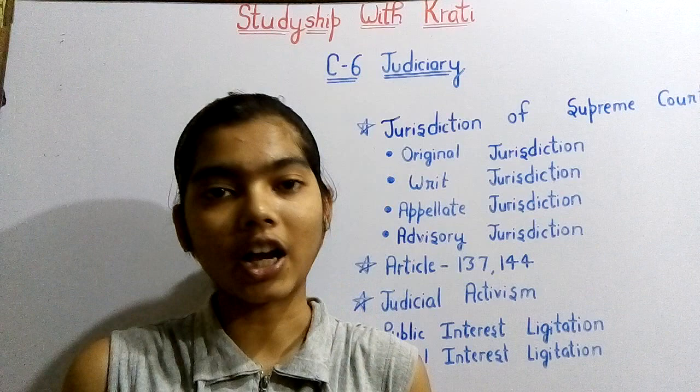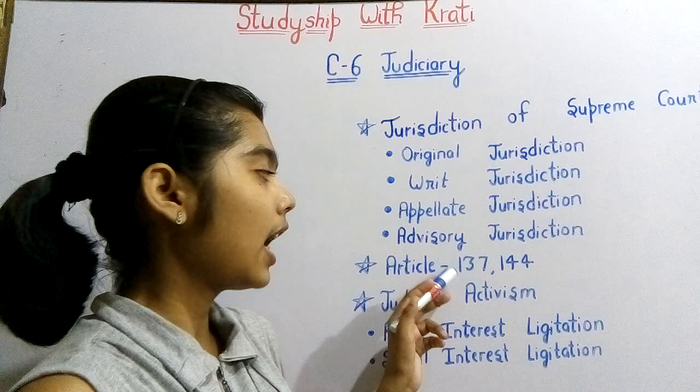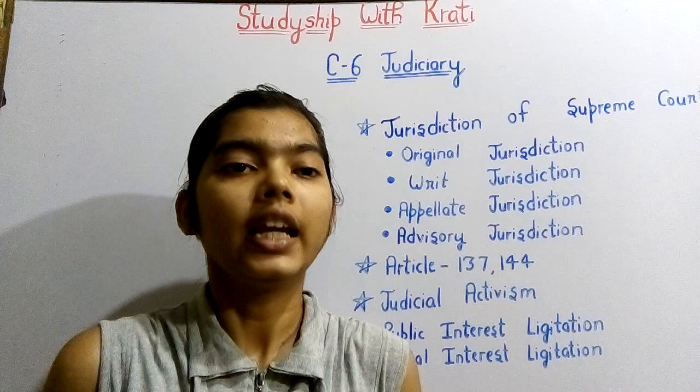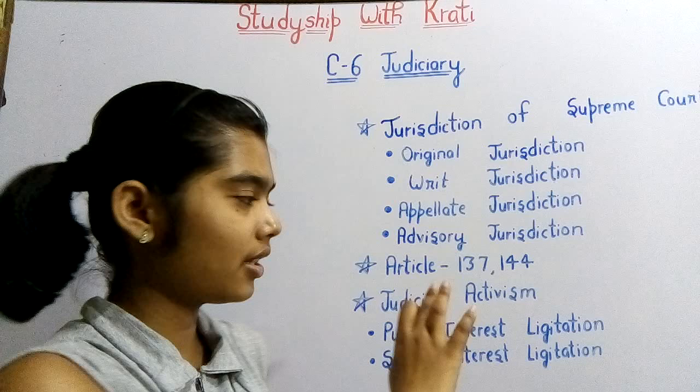Next is Article 137 and 144. Agar ham baat karen Article 137 ki, to Article 137 hamein batata hai ki jo bhi rules and regulations hain woh bahut hi zyada essential hain — jo bhi kaam hoga woh iske antaragat hoga. Pehle humko Article 137 discuss karna hai. Pahle dekhte hain Judicial Activism.